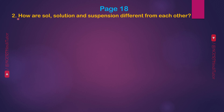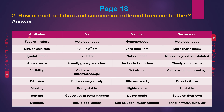Question 2: How are sol, solution, and suspension different from each other? Answer — Sol: type of mixture is heterogeneous. Solution: type of mixture is homogeneous. Suspension: type of mixture is heterogeneous.